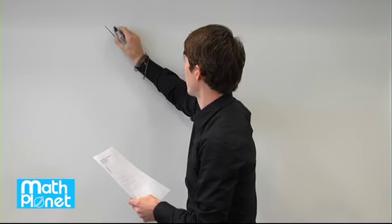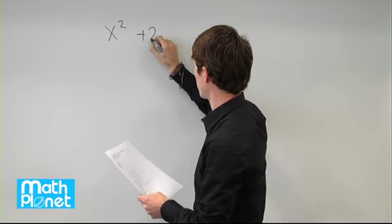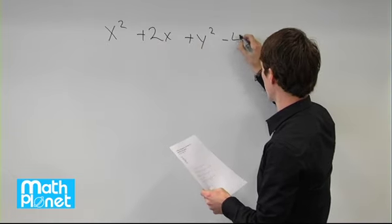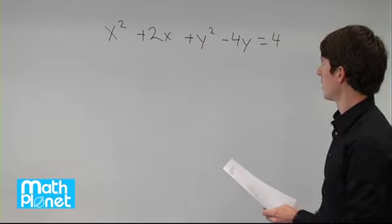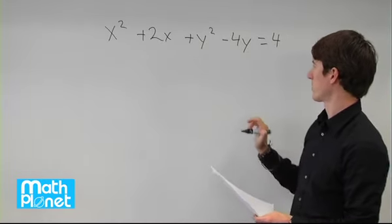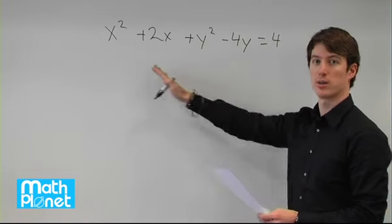So what we have is x squared plus 2x plus y squared minus 4y equals 4. So we need to add some number to both these x and y parts to make a perfect square for both of these.